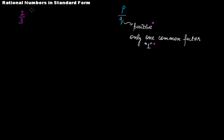What about 2 over 3? Is this rational number in its standard form? The first condition: the denominator should be positive — yes, it is positive. The second condition: it should have only one common factor. Clearly, 2 and 3 have only one common factor, and that is one. What about 2 over 7? Yes, that rational number is also in its standard form because the denominator is positive and they have only one common factor, which is one.